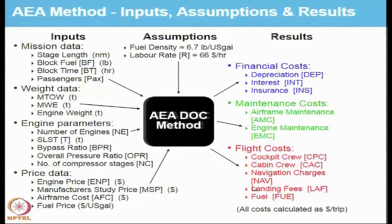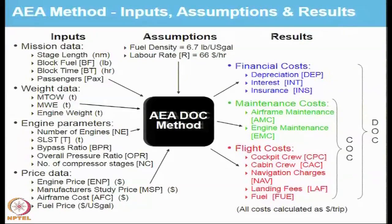All costs are calculated in US dollars per trip, but you can also express them as US dollars per trip per passenger or US dollars per nautical mile per passenger. The costs associated with maintenance and flight of the aircraft are called COC, the carrier operating cost — the cost the carrier or airline actually incurs. If you add the financing cost to that, we call it the direct operating cost.